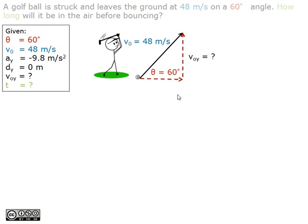From the diagram, we see that we have to find out the vertical velocity of the ball, as we will be using it to calculate the time the ball is in the air.